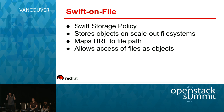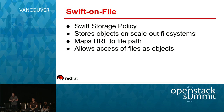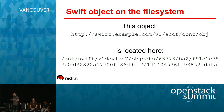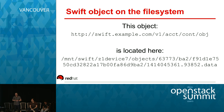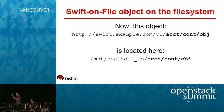What Swift on File does is take objects and place them directly on a clustered file system. It maps the URL path verbatim, creating directories on the clustered file system. So for a given object with account, container, and object path, standard Swift lays it on the file system in a complicated way — but Swift on File lays it down with a clear, simple path that is very easy to find on a clustered file system.